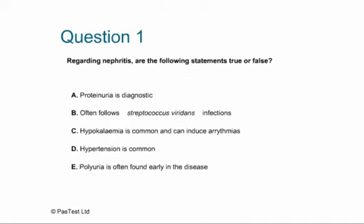Let's start with Question 1. Regarding nephritis, are the following statements true or false? A: Proteinuria is diagnostic. B: Often follows staphylococcal infections. C: Hypokalemia is common and can induce arrhythmias. D: Hypertension is common. And E: Polyuria is often found early in the disease.